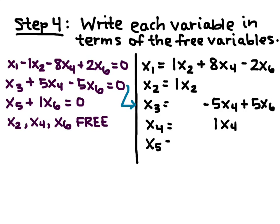And then, X5 equals negative 1X6 from that third equation, and then X6 equals itself because it's a free variable. So, each free variable is set equal to itself.